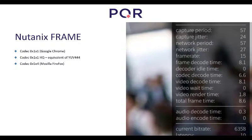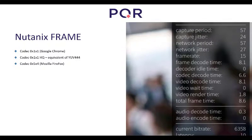When doing HTML5 tests we also tested Nutanix Frame. Frame has two codecs: codec 0x1 used in Google Chrome, with an HQ setting equivalent to YUV 444 for the 2D CAD experience. When using Mozilla Firefox, codec 0x5 is used instead.